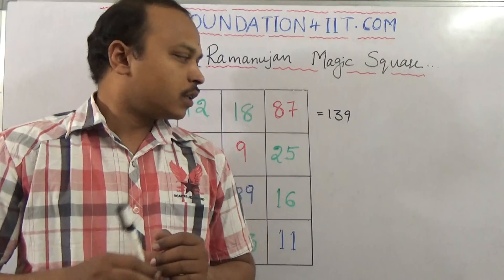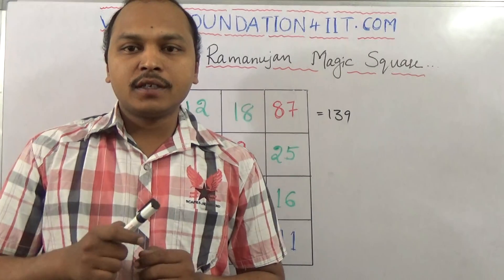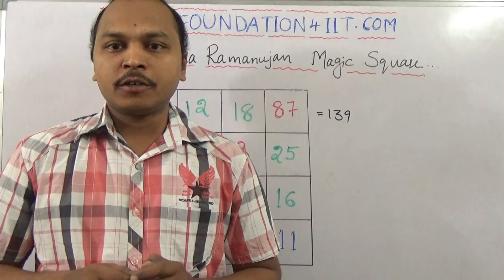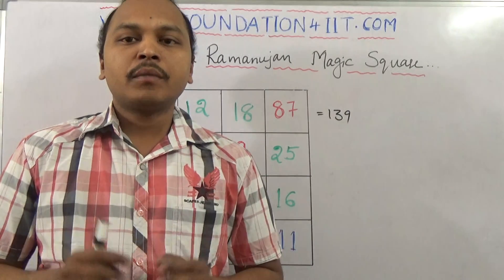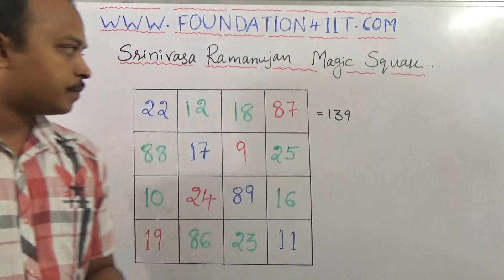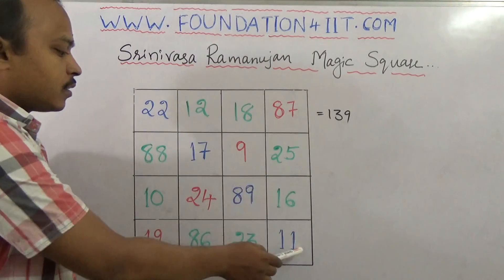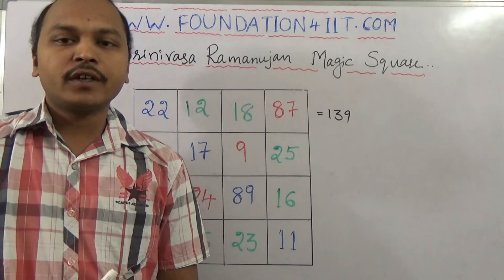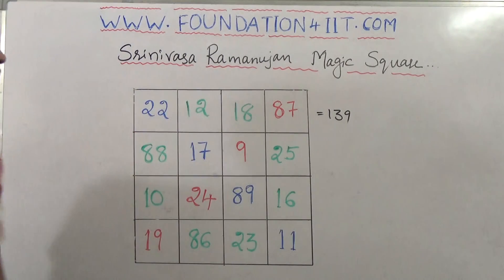Apart from this, even the diagonal — the sum of the digits in the diagonal is also 139. So many squares are there with the same rule. But some more speciality of this is the corners — the four corners, if you add them, will also get 139 as the total sum.